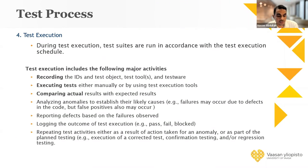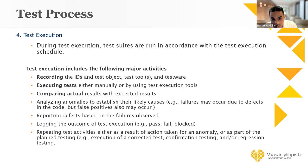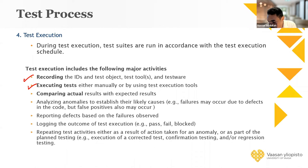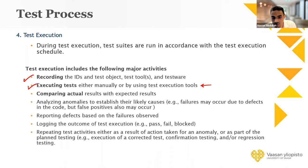Now let's see the last two steps: test execution and test completion. In test execution, you have the test cases ready and you have already organized them into test procedures and test suites. The main task of this phase is running the test. Before that, you have to record information about the test — the test ID, the test object, the test tool — and then compare the actual result with the expected result and record it, whether it passed or failed.